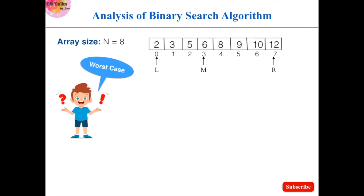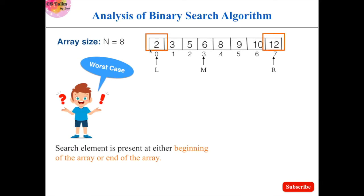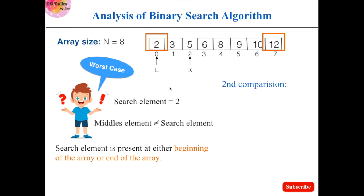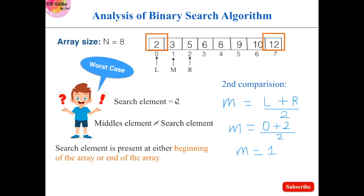The worst case occurs when the search element is present either at the beginning or at the end of the array. For example, taking 2 as the search element: 6 is the middle element. It is compared with 2 — both are not equal, so the algorithm moves the right iterator left. In the second iteration, L is 0 and R is 2, giving a new midpoint of 1. The middle element 3 is compared with 2 — again not equal, so the right iterator moves again.